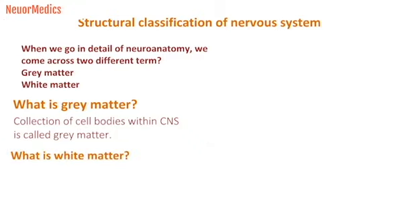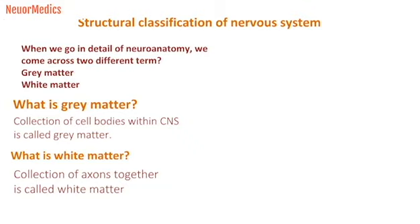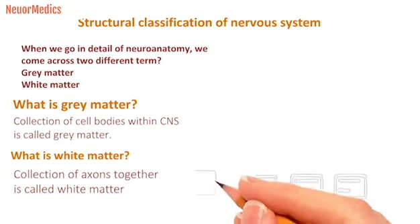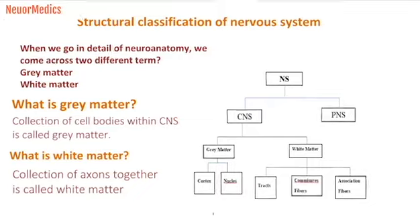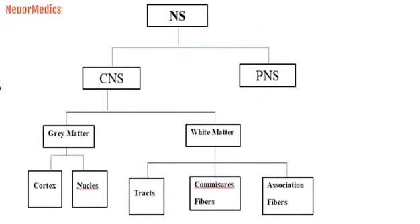We will discuss in detail the structural classification of the nervous system. The nervous system is divided into two parts: the central nervous system and the peripheral nervous system. We will discuss the structural classification of the central nervous system, which is divided into two parts: gray matter and white matter. Gray matter is further divided into two parts: cortex and nucleus.